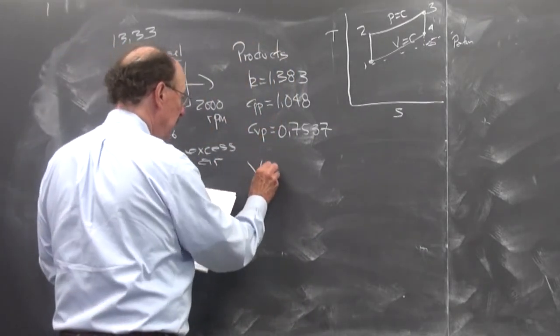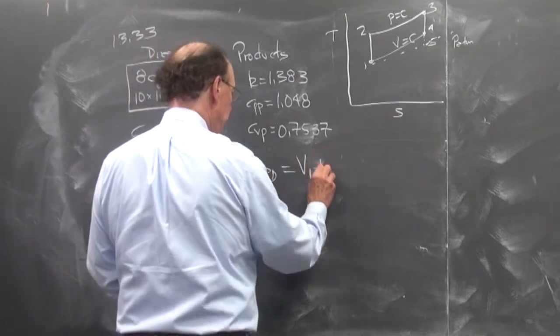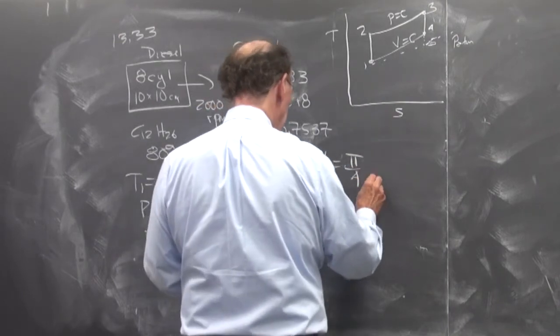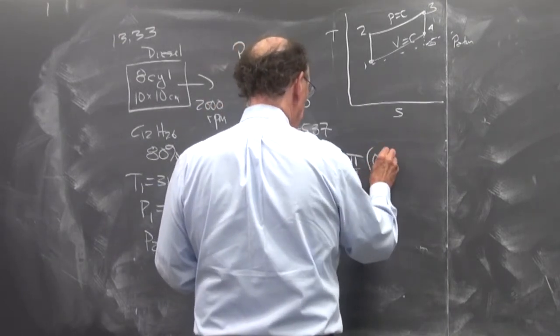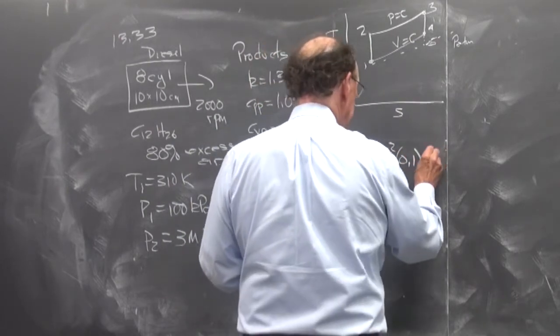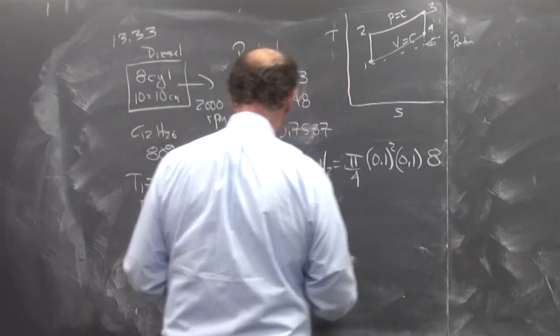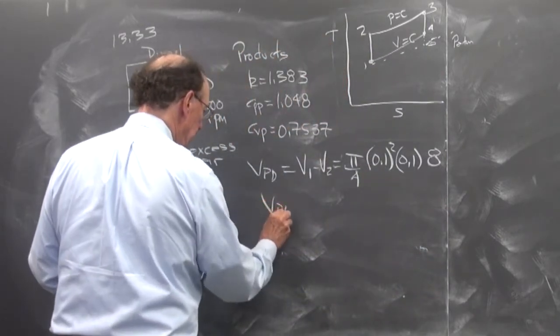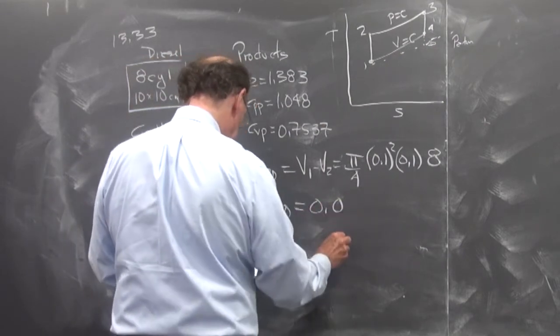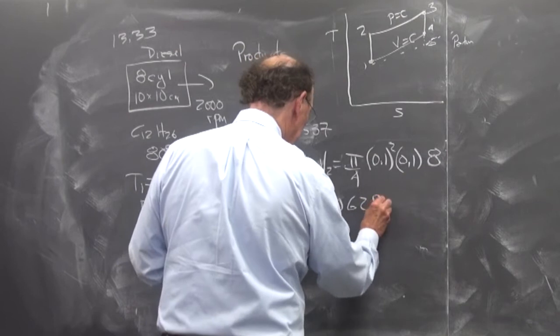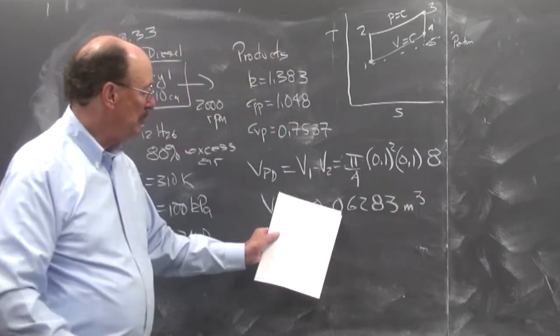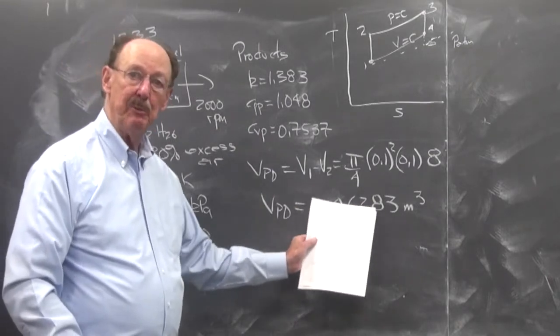So, V sub PD is equal to V1 minus V2 is equal to pi over 4 D squared, 0.1 squared times L, 0.1 squared times 8, 8 cylinders. And so we have that V sub PD is equal to 0.06283 cubic meters. So in terms of liters, this is about 63 liter engine.